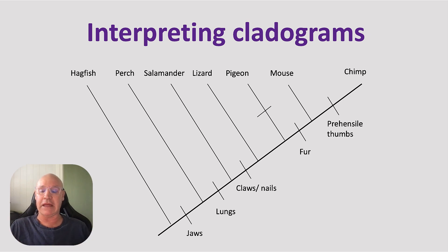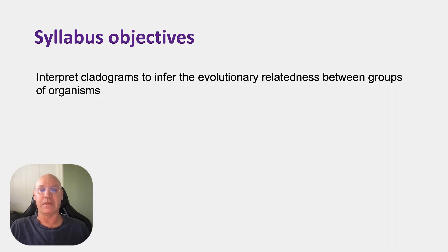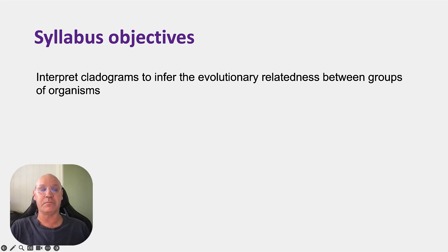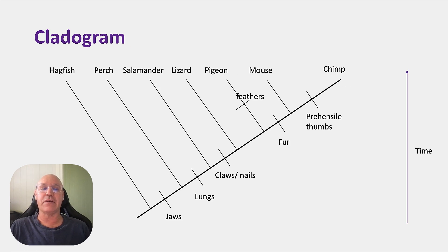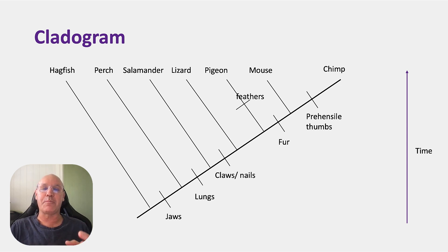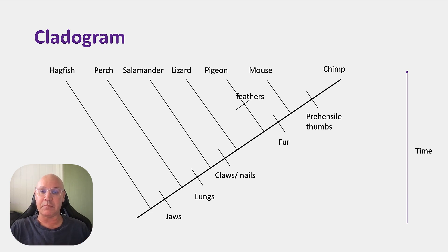Let's look at interpreting cladograms. The syllabus objective is that you need to be able to interpret cladograms to infer the evolutionary relatedness between groups of organisms. A cladogram is a branching diagram that represents the hypothesized evolutionary relationship between species.